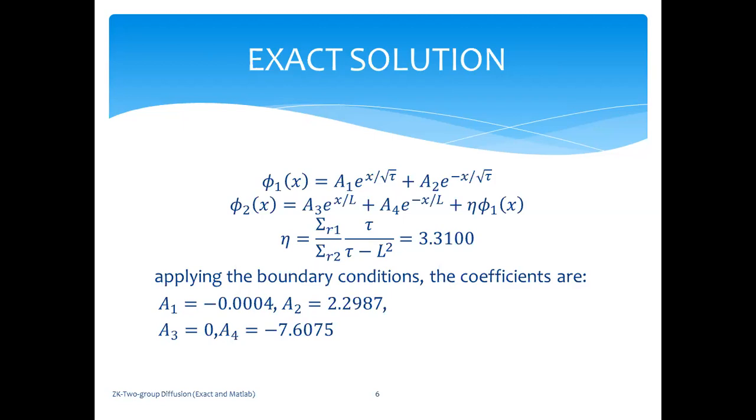The equation for the thermal flux φ2 has a complementary solution with a diffusion length L plus a particular solution with a constant term eta, where eta is sigma_r1 over sigma_r2 times tau/(tau - L²), which is also a constant equal to 3.31. This is just a standard sum of the complementary solution plus the particular solution. The way I do particular solution is to use the derivative operator as a scalar, put it in partial fractions, then bring the derivatives from denominator to the numerator, write it down as a binomial series, and the terms cancel out nicely.